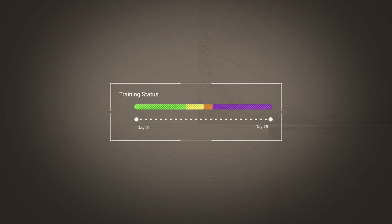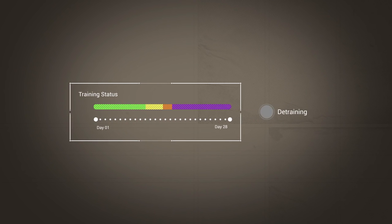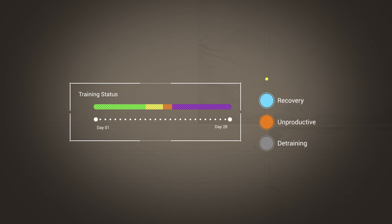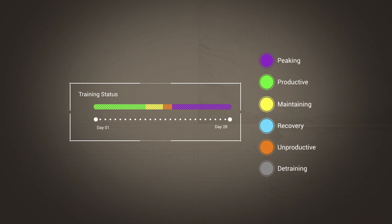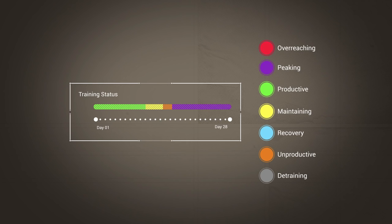This short-term, long-term comparison is a key factor in analyzing training load change. There are seven training status levels in addition to no status. These are: detraining, unproductive, recovery, maintaining, productive, peaking, and overreaching.